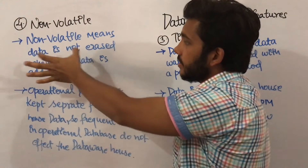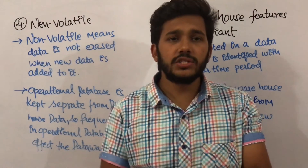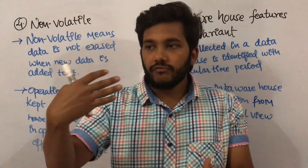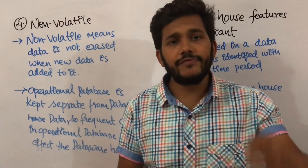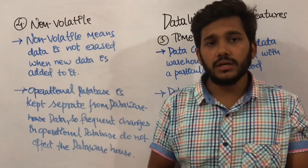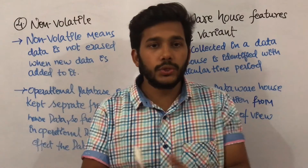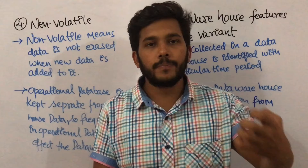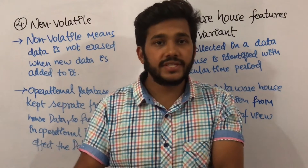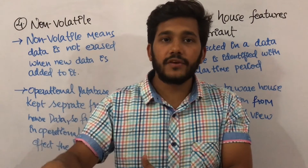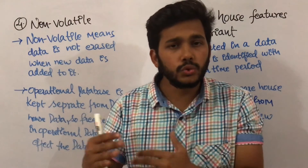The fourth feature is non-volatile. Non-volatile means data is not erased when new data is added. Unlike an operational database where data changes frequently — for example, worker data may change after five months — a data warehouse can hold five years of employee records. Data in the operational database changes frequently; in the data warehouse it does not, which includes tracking which employees left the service section or cooking section of a restaurant.